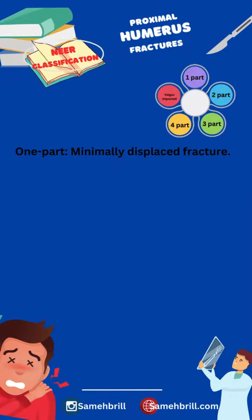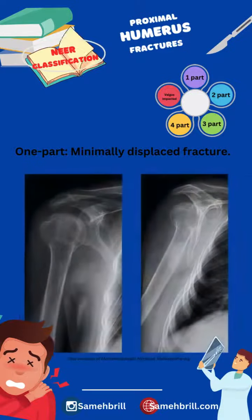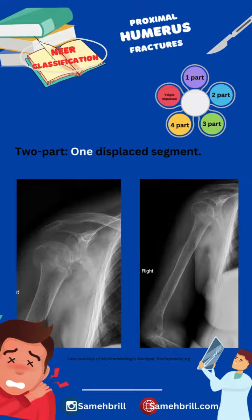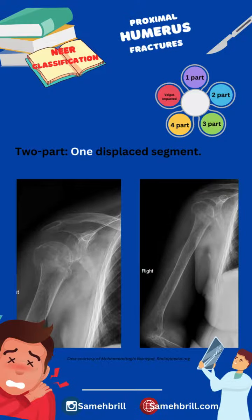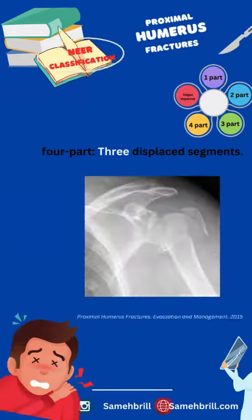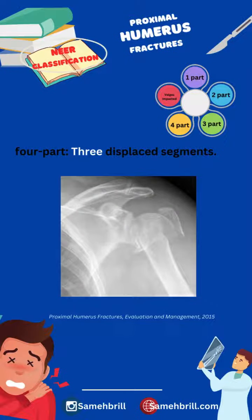A one-part fracture is a minimally displaced fracture. A two-part fracture has one displaced segment. A three-part fracture has two displaced segments. A four-part fracture has three displaced segments with respect to the fourth.